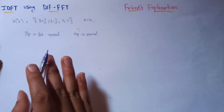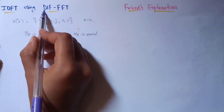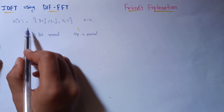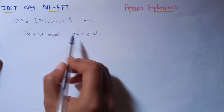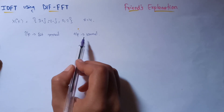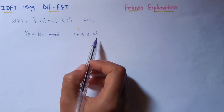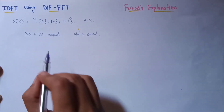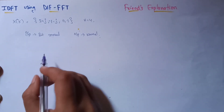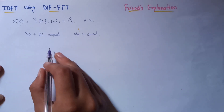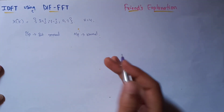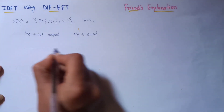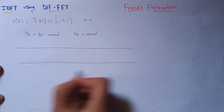Because it is decimation in frequency, we take bit reversal of the frequency sequence, and the index of the time domain sequence is in normal order. If you don't know what bit reversal is, please refer to the previous video. After that, come back to this video. Now let's directly draw the butterfly diagram.